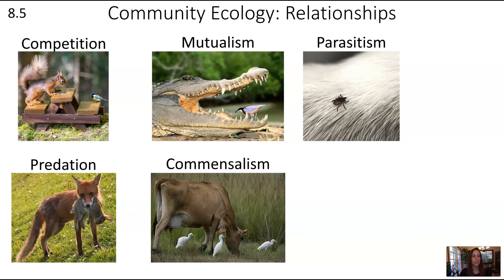Predation is a predator-prey relationship where one organism kills another for a food source. Commensalism is probably the hardest one to figure out: a cow is grazing, stirring up bugs in the grass. The cow is just eating grass, minding its own business — the birds aren't bothering the cow, not doing it any benefit or harm — but the birds benefit because the cow stirs up insects that the birds can eat.